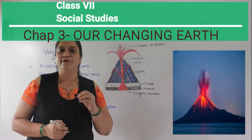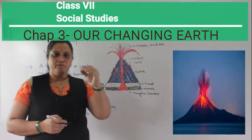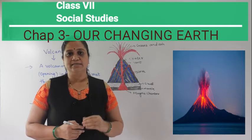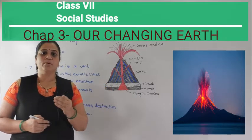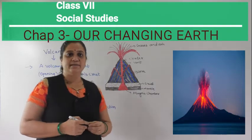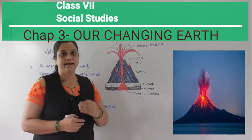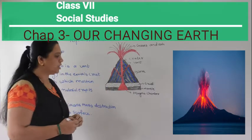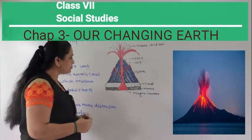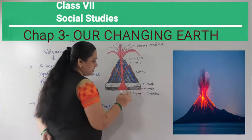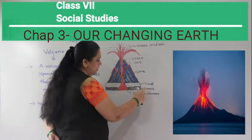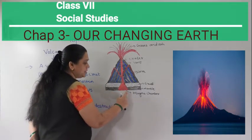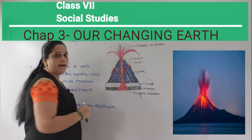We have studied about the different layers of the earth. The outermost layer is the crust, and below the crust the second layer is the mantle. The hot molten magma is found in the mantle. In this diagram of a volcano, we can see the earth's crust, the mantle layer, and the magma chamber shown in red, where magma is stored.